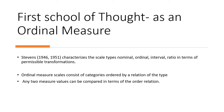The first school of thought says that Likert scale is an ordinal measure. If the data is ordinal, we cannot use parametric assumptions or parametric statistics — we need to use non-parametric statistical tests. Stevens, in his 1946 paper, pointed out that Likert scales are types of nominal, ordinal, interval, and ratio scales in terms of permissible transformations. The ordinal school says it is an ordinal measure scale consisting of categories ordered by a relation, where any two measured values can be compared in terms of the order relation.